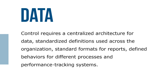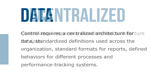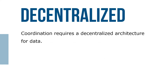Control requires a centralized architecture for data, standardized definitions used across the organization, standard formats for reports, defined behaviors for different processes, and performance tracking systems. Coordination requires a decentralized architecture for data and standardization within departments.